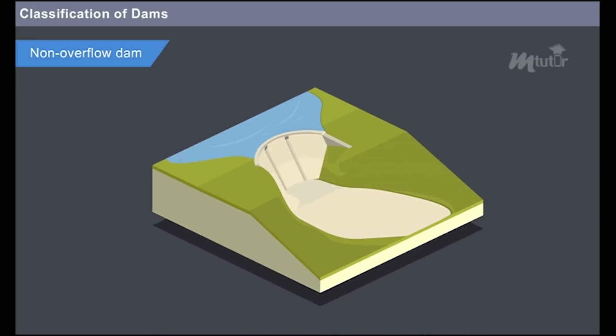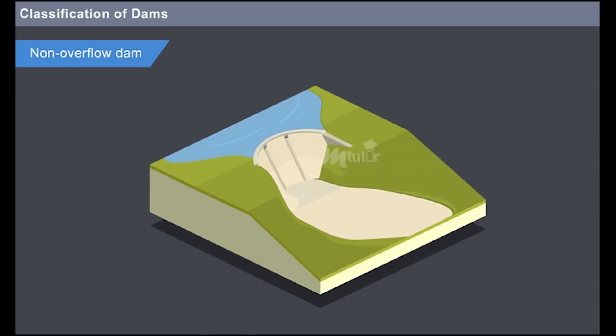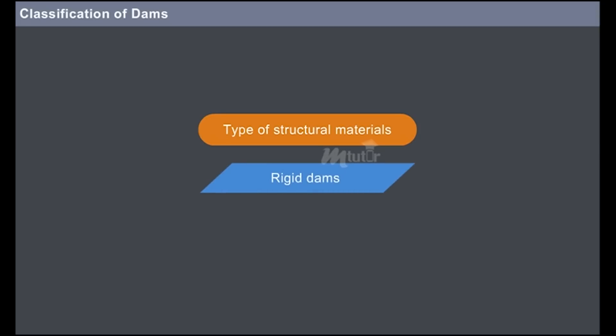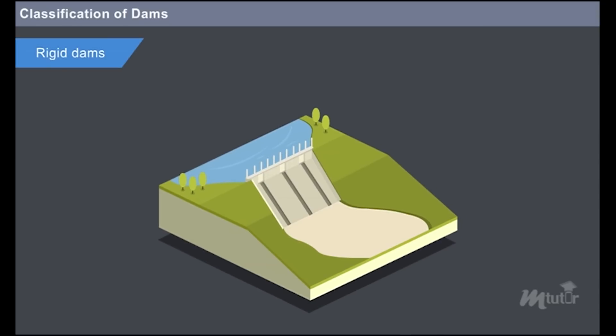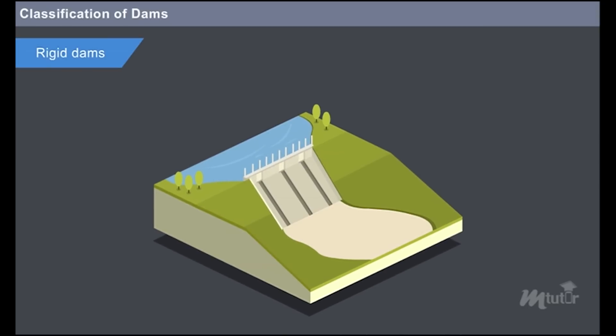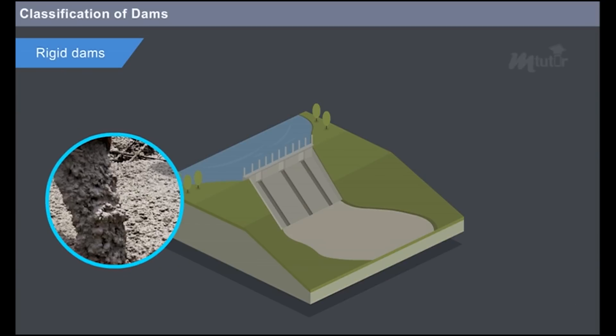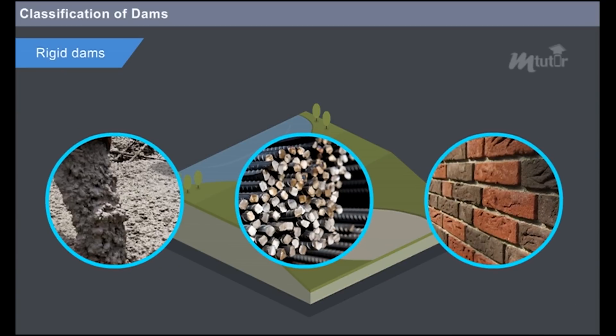Based on the type of structural materials, dams are classified as rigid dams and embankment dams. The dams which are constructed with rigid materials such as concrete, steel, masonry etc. are known as rigid dams.